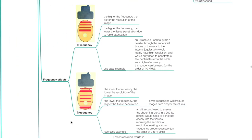Effects of ultrasound frequency: the higher the frequency, the better the resolution of the image, but the lower the tissue penetration due to rapid attenuation. The lower the frequency, the lower the resolution of the image, but the higher the tissue penetration. Lower frequencies will produce images from deeper structures.